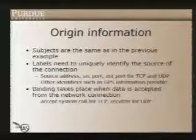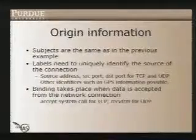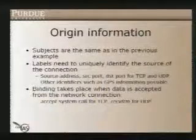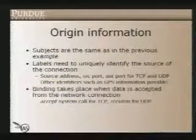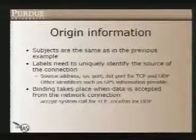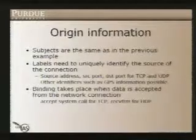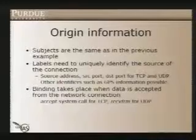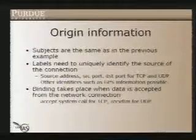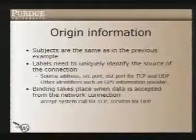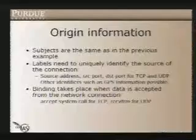The second case study is origin information. We have the same subject world as before — processes on a system and shared objects. But the labels now need to uniquely identify the source of the connection, which could be a network identifier: source port, destination port, and source address for TCP and UDP. You can even use GPS information to convey origin. The binding takes place when you accept data from a network — the accept system call for TCP, or receive from for UDP.